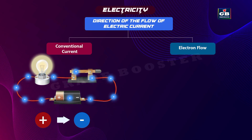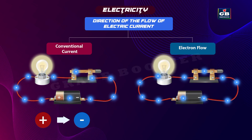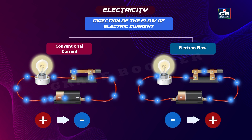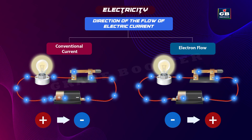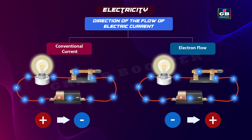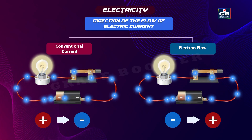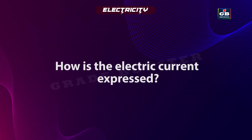Electron flow: In reality, electric current in a conductor such as a metal wire is due to the flow of electrons. Electrons are negatively charged and move from the negative terminal to the positive terminal of a power source. This is the actual physical flow of electric charge in most conductive materials.